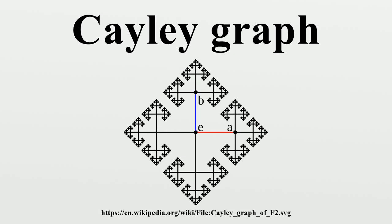In mathematics, a Cayley graph, also known as a Cayley color graph, Cayley diagram, group diagram, or color group is a graph that encodes the abstract structure of a group.